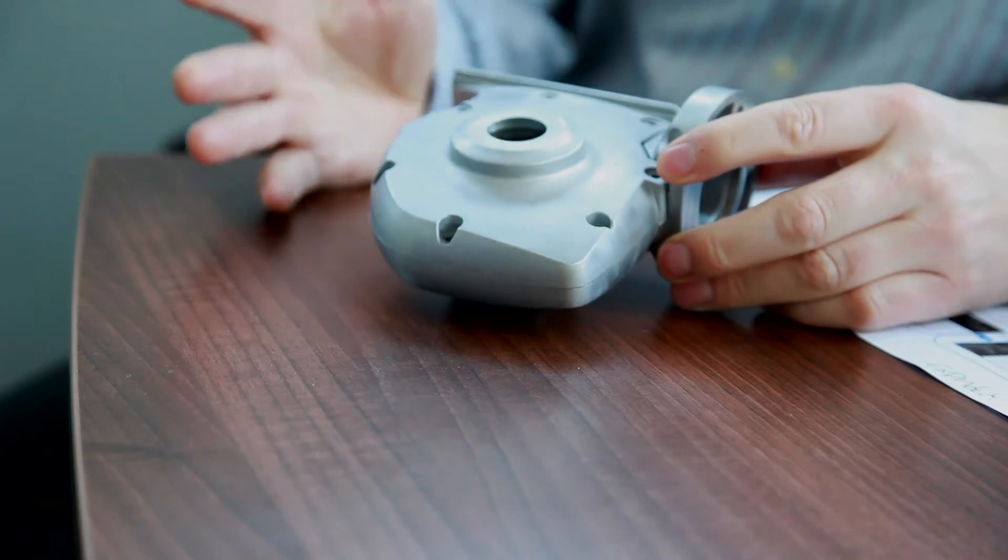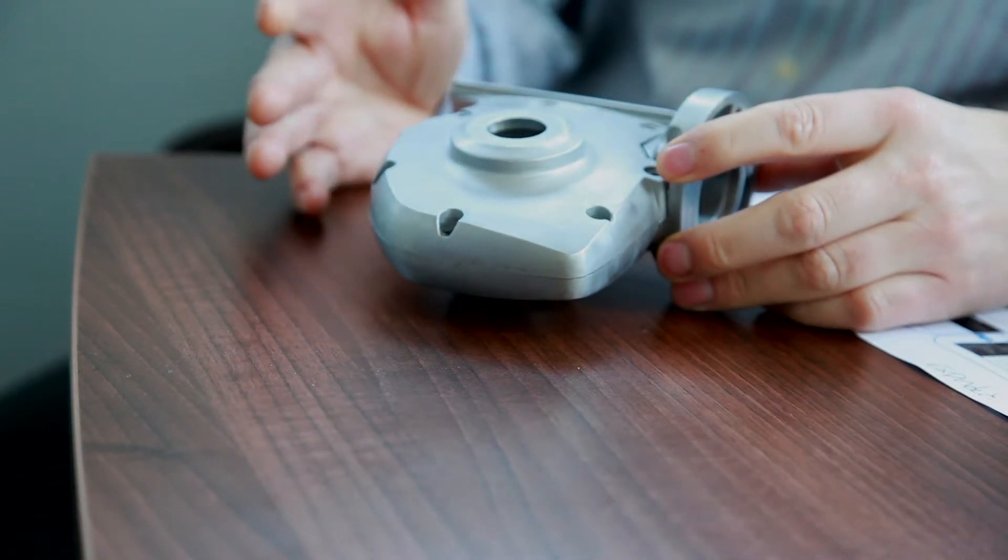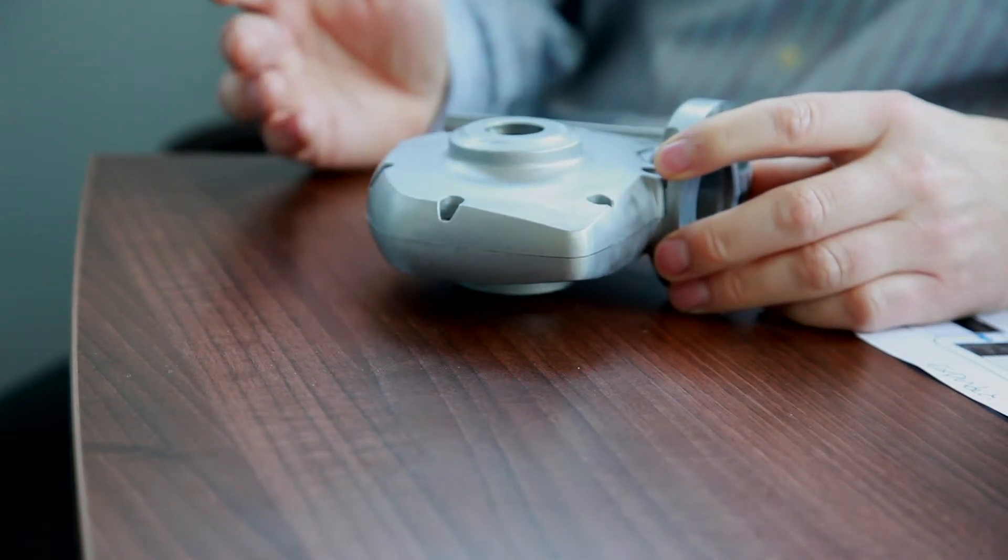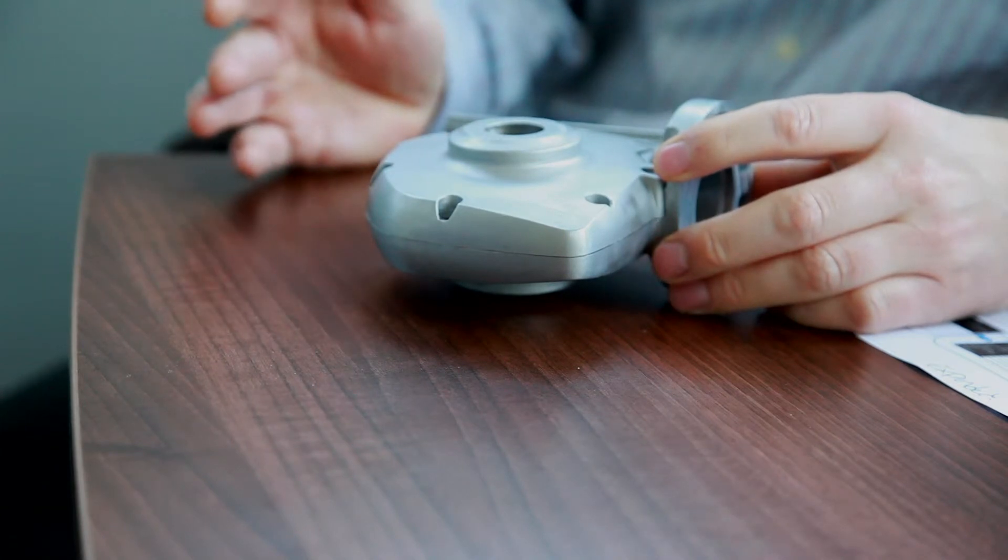The key stages in the APQP process can be seen in this product we have here. Whether it comes down to things like the material, whether it's aluminum or a composite or a plastic, right down to the design robustness and what's the requirement to meet the specification.